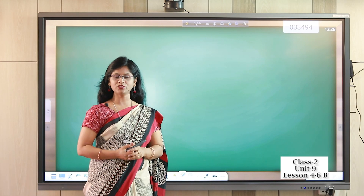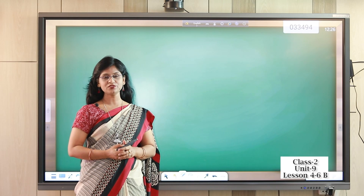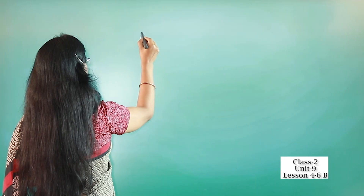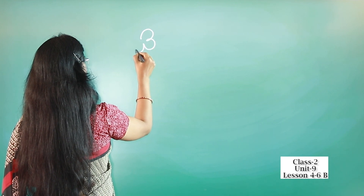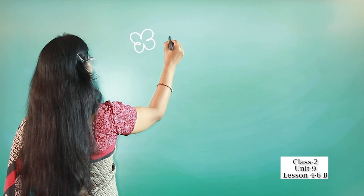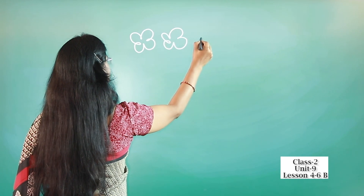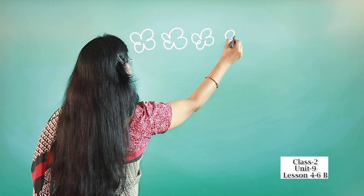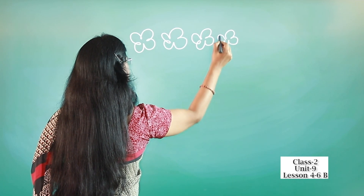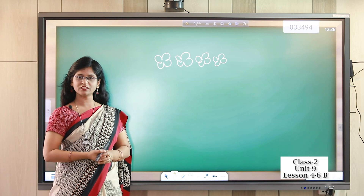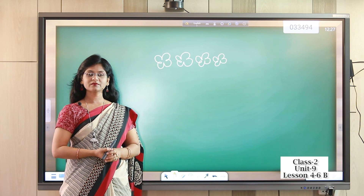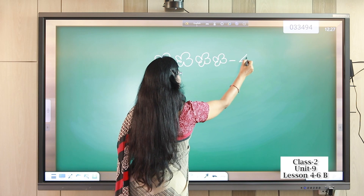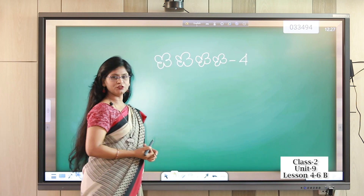Now I'm going to draw some pictures. You have to count and write the numbers in your notebook. I'm going to draw flowers. Now count the flowers — how many flowers are there? Yes, four flowers. You have to write four in your notebook.